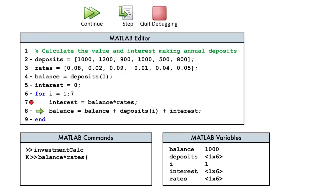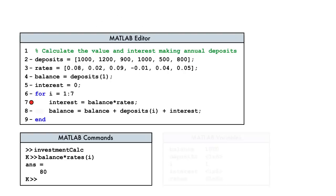In debug mode, we can type commands to test possible corrections. Here what we meant to do was use the loop variable i to select a value from the vector rates. Since we found the error, let's press the Quit Debugging button, and update the code file.